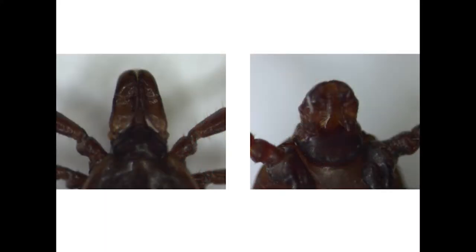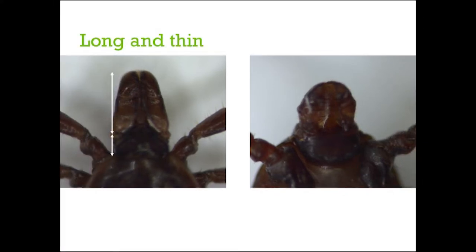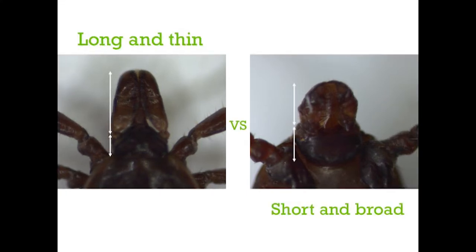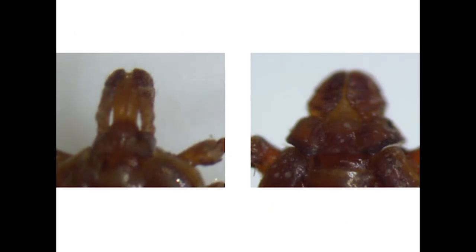The next thing we want to do is look at the capitulum and compare the length of the palps to the length of the basis capituli. These images show you two different combinations. On the left-hand side, you see long, thin palps, which means the palps are much longer than the length of the basis capituli, which is the bottom arrow. On the right-hand side, you see short, broad palps — these palps are about the same length as the basis capituli. Finally, you can also look at the shape of the basis capituli. Ticks can be very small, so you may not be able to differentiate the shape of this feature with the naked eye.